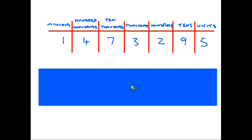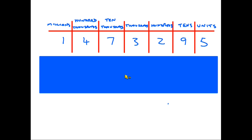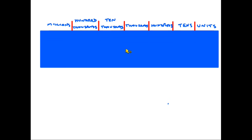The number we're going to look at here is 1,473,295. This has already been split up into its columns with the names of the columns shown. One job you do have to do is learn the names of the columns, just to make it a little bit easier. There is some common sense here that we can use to help us learn these.